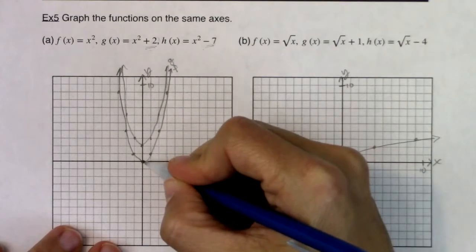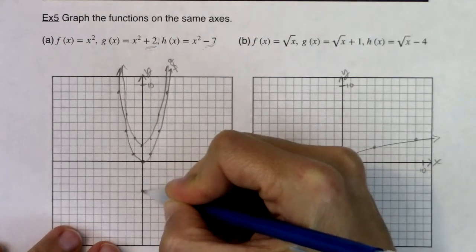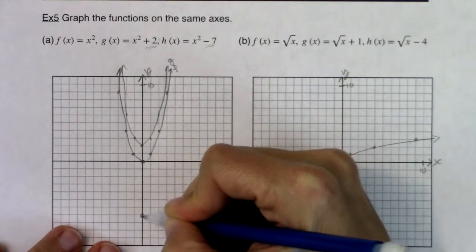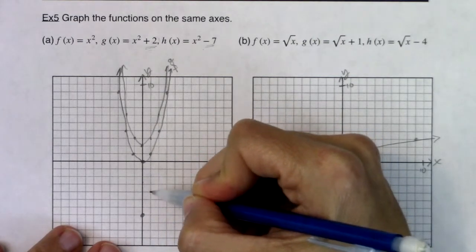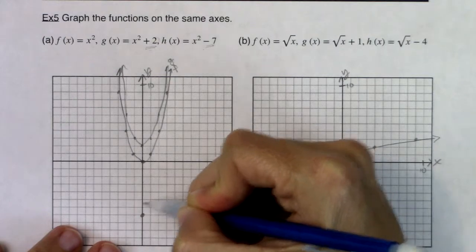So I can literally count from each of these points and go one, two, three, four, five, six, seven. That's going to be a point. Here I go. One, two, three, four, five, six, seven. Alright.